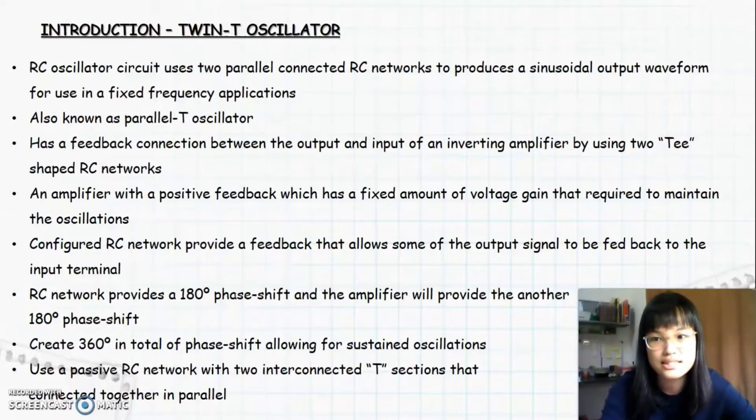The twin-T oscillator is an RC oscillator circuit that uses two parallel connected RC networks to produce a sinusoidal output waveform for use in fixed frequency applications. It is also known as a parallel-T oscillator. The twin-T oscillator has a feedback connection between the output and input of an inverting amplifier by using two T-shaped RC networks. It is an amplifier with positive feedback which has a fixed amount of voltage gain required to maintain the oscillations.